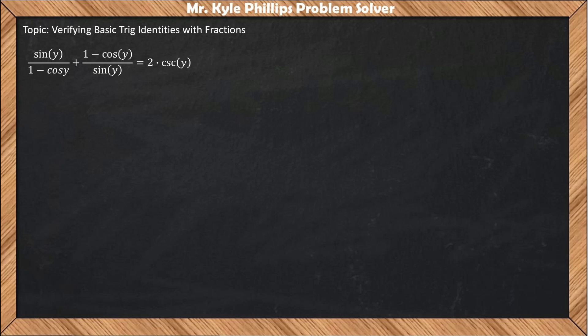Hey everybody, in this video we're going to be talking about verifying basic trig identities with fractions. We're given this problem here and we have 1 minus cosine y and sine y in our denominator.